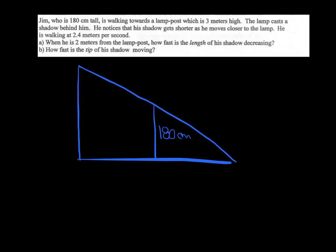Jim, who is 180 centimeters tall, is walking towards the lamppost, which is 3 meters high. So again, I'm going to slow down and get my picture drawn out. Jim is 180 centimeters, and the lamppost is 3 meters. So that's one thing to pick up on. They're giving you different units, so just be careful with that. The lamppost casts a shadow behind him.